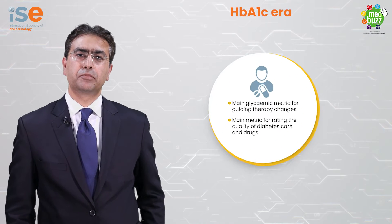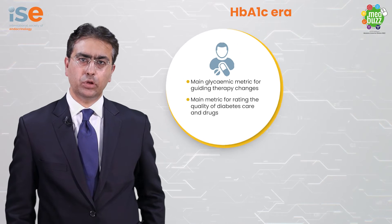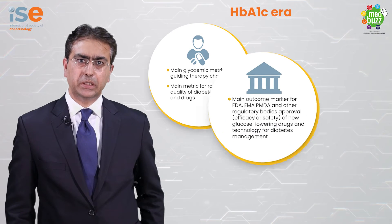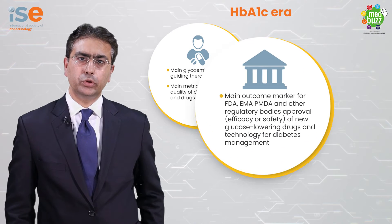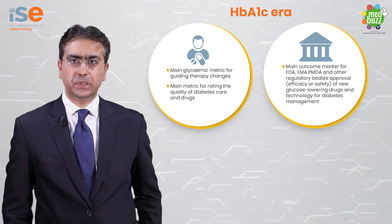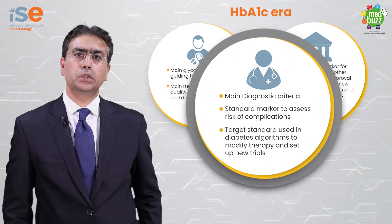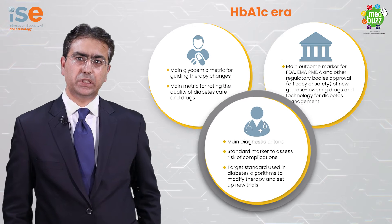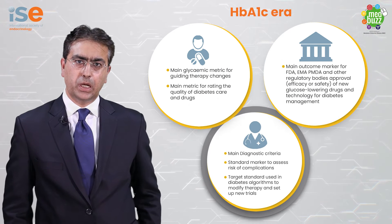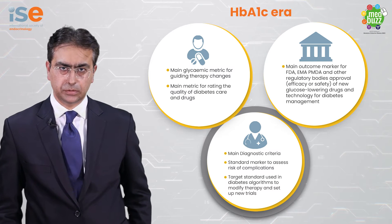Historically we have been living in the HbA1c era, as HbA1c has been used not only as a main diagnostic criteria but is also used as the main glycemic metric for guiding therapy changes. It is also a standard marker to assess risk of complications and its main metric for rating the quality of diabetes care and drugs.